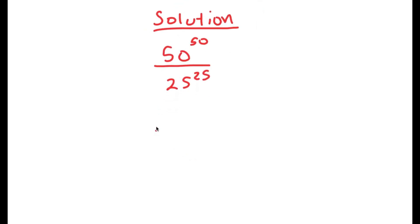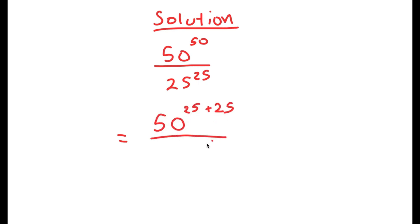I'm going to first rewrite this as 50 to the power of 25 plus 25. So now I have 50 to the power of 25 plus 25, over 25 to the power of 25.